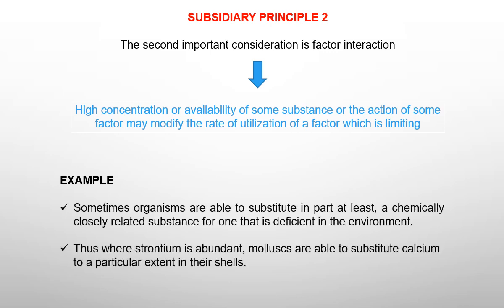Another example: where strontium is abundant, marine organisms are able to substitute strontium for calcium to a particular extent in their cells in that particular environment.